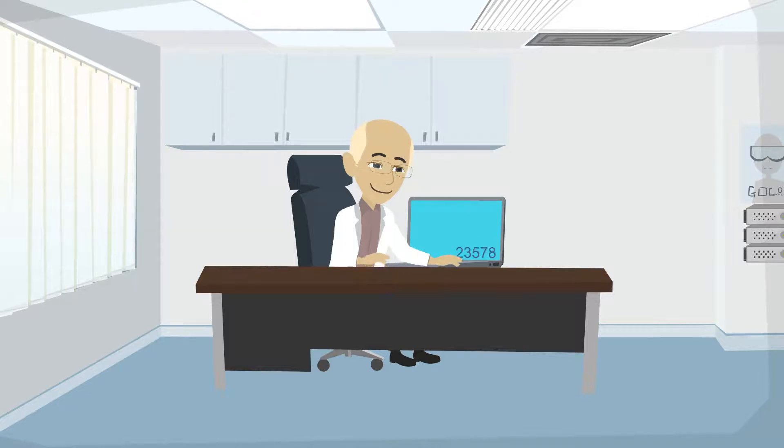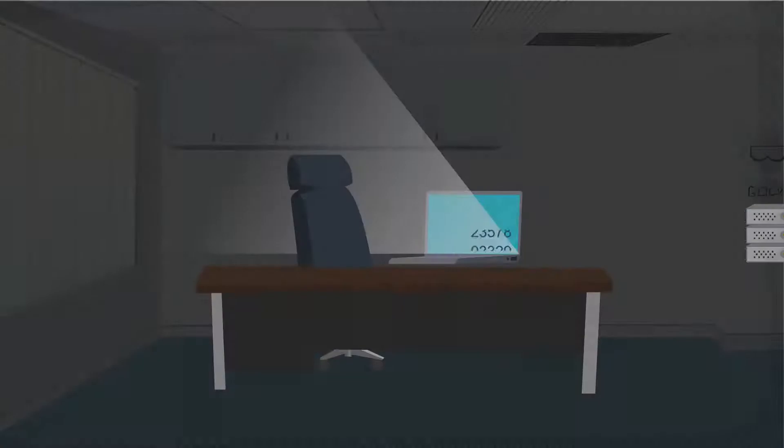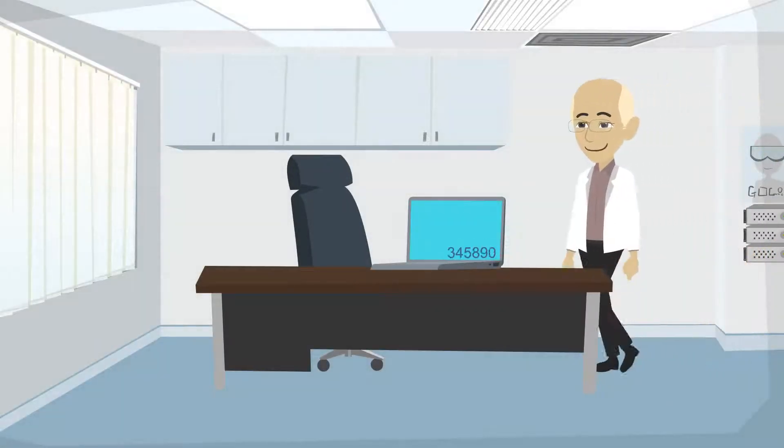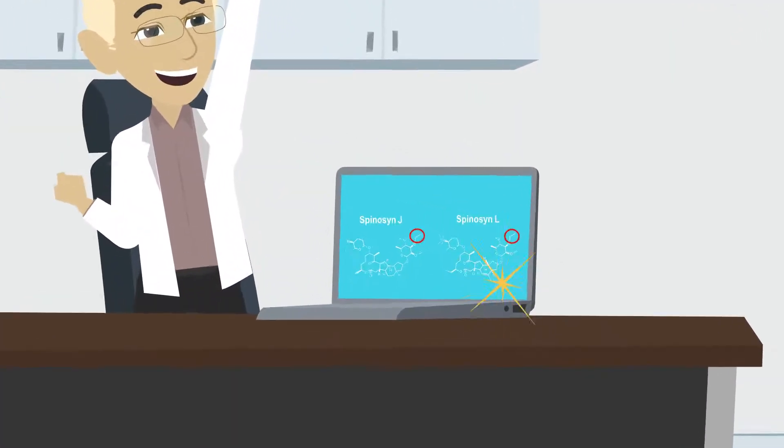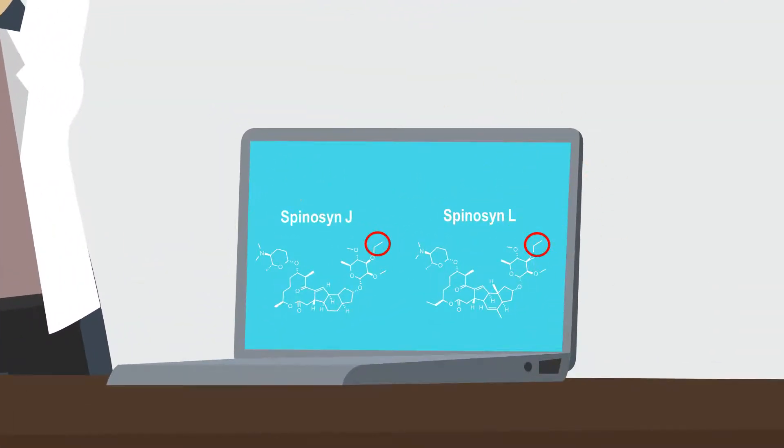Back in his lab, Tom used artificial intelligence-based software to analyze the spinosan molecules, letting it learn combination patterns. In a short time, Tom had an answer. A small chemical modification was identified in spinosans J and L, with the potential to make them more effective than Kalkova.